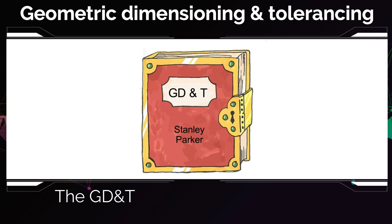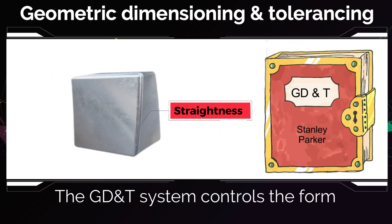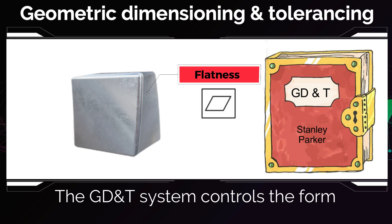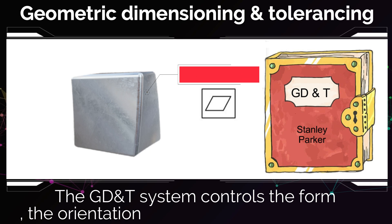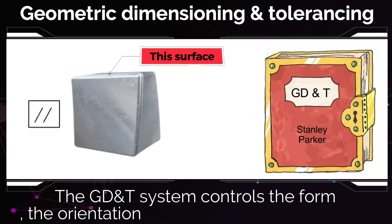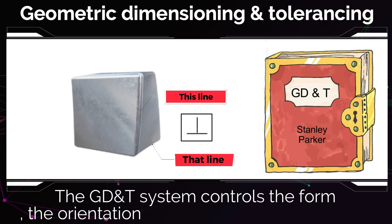The GD&T gives us the power to control the form of elements. I can control that line that was not straight and resulted in accepting a part that was not okay. I can tolerate the flatness of surfaces so they don't become wavy. I can relate the orientation of features of the part to each other — for example, I can say that this surface should be parallel to that surface, and this line has to be perpendicular to that line.